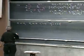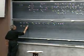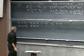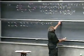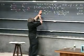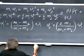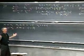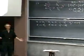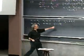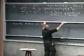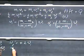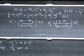Now take the case M1 much less than M2 — the limiting case where M1 goes to zero. Substituting gives V1 prime equals minus V1: completely obvious. The ping-pong ball bounces off the bowling ball and just bounces back. And V2 prime goes to zero because M1 goes to zero — the bowling ball doesn't do anything. Very intuitive.